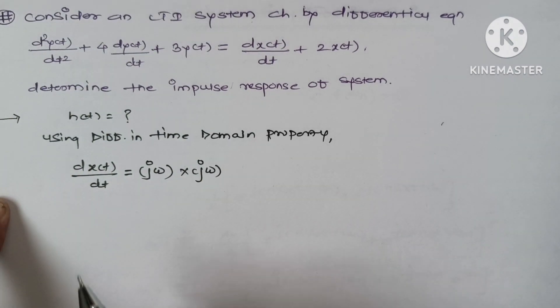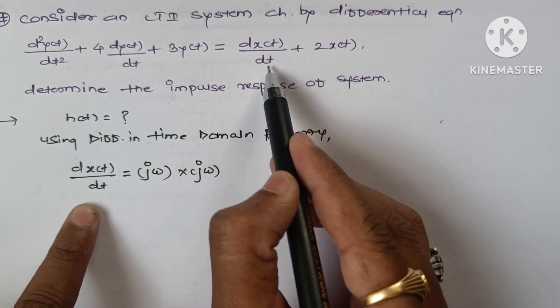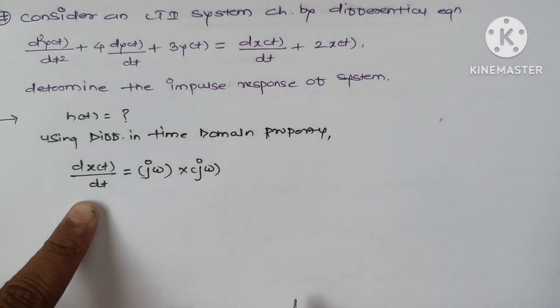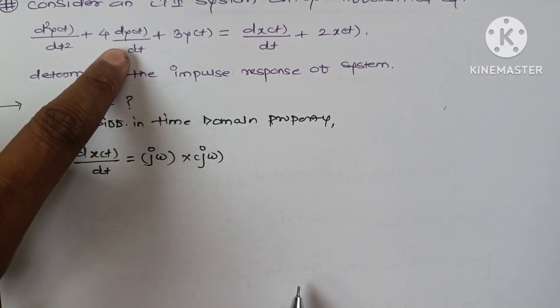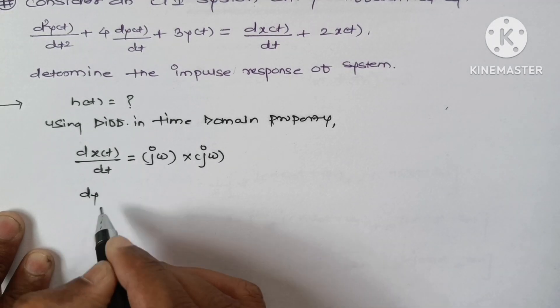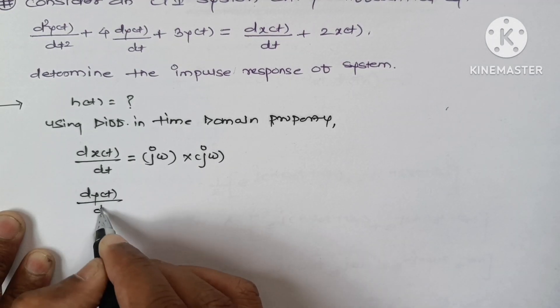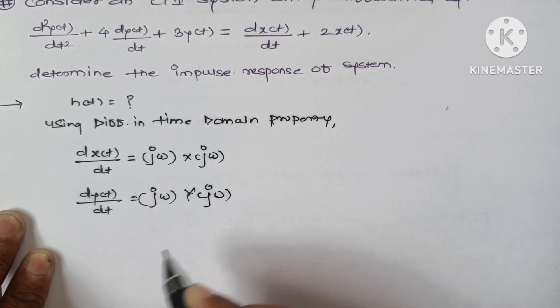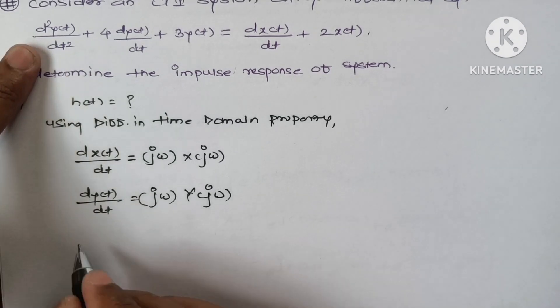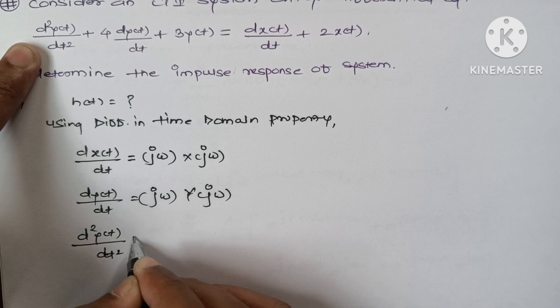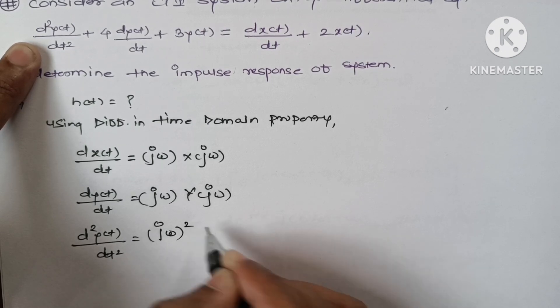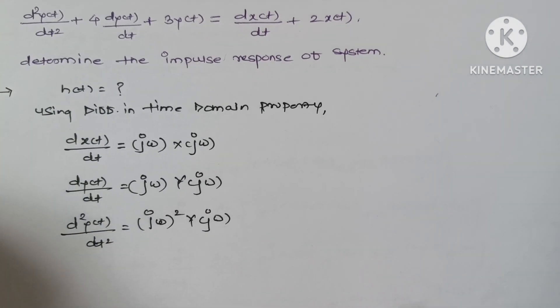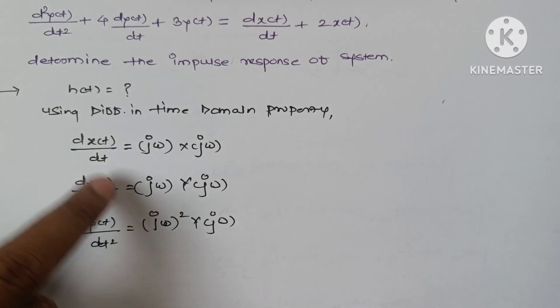So dx(t)/dt will be jω times y(jω) and this is double differentiation, so d²y(t)/dt² is (jω)² times y(jω). We substitute these values in the equation.